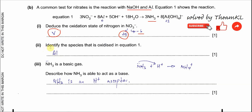Part B2: Identify the species that is oxidized in equation 1. The aluminum initially has an oxidation state of zero. After the reaction, it is in the product compound where aluminum is +3, and 4 hydroxide groups give −4 overall, confirming aluminum is +3. So aluminum is oxidized, going from 0 to +3 oxidation number.